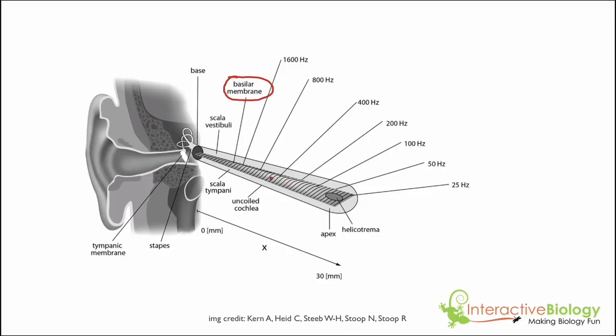What you're going to notice about the basilar membrane is it's thinner over here than it is over here. At this end it's significantly thinner, and as it goes away from the oval window — where the malleus, incus, and stapes connect — it gets thicker and thicker until it's thickest right here at this end.